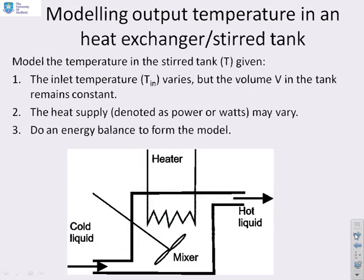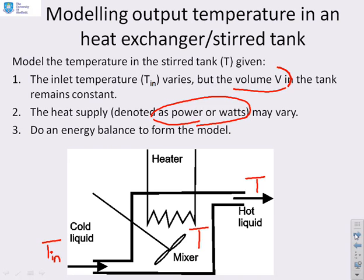Let's revisit this diagram and check exactly what's going on. What we want to do is ascertain the temperature — capital T — of the fluid or liquid in the tank, and we will assume that's the same temperature as the output flow. We will have something coming in which we will say has got temperature T_in. The heat supply is going to be given as power or watts, and we are going to assume that the tank has a volume V. We will use an energy balance to find out what's going on in this system.